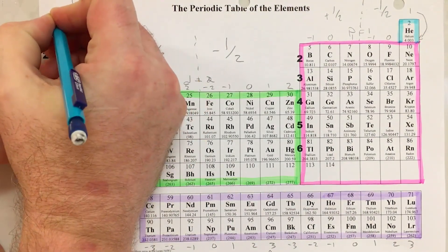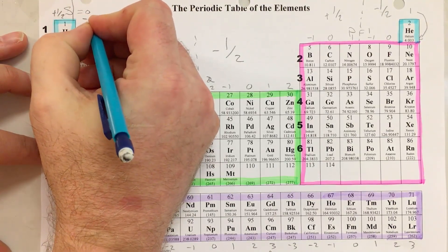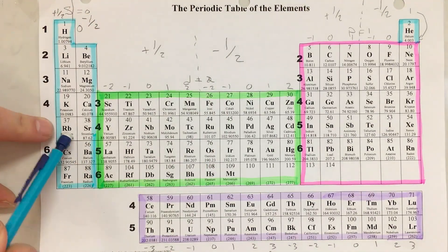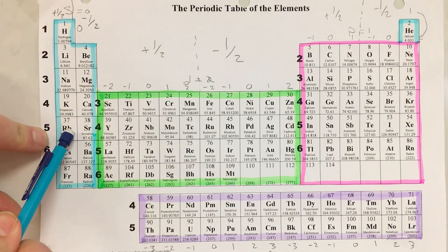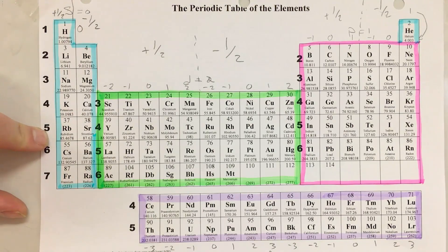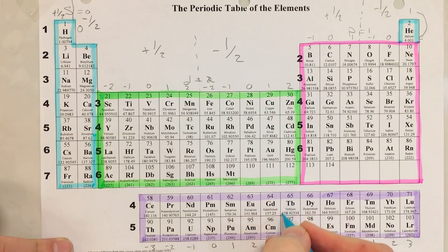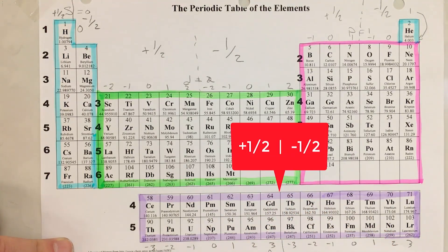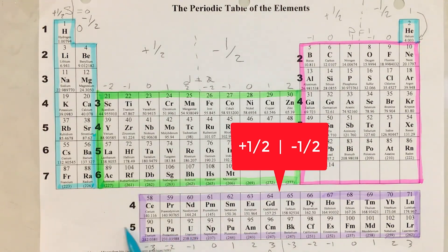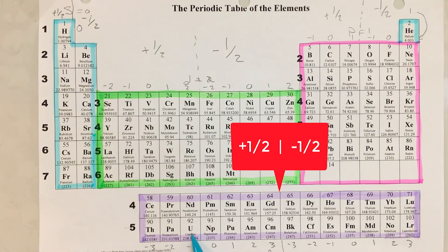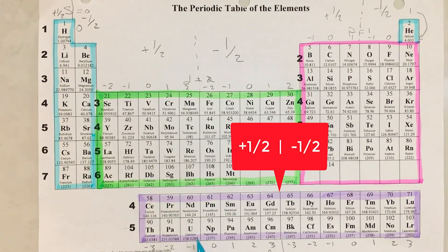The s block is great because there are only two columns: the first column is plus one half and the second column is minus one half. For rubidium: five, zero, zero, plus one half. For the f block — split between the left half (plus one half) and right half (minus one half) — uranium gives us: first quantum number is 5, second quantum number is 3, third quantum number is minus one, and fourth quantum number is plus one half.